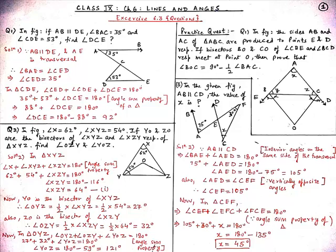Now, students, according to our figure, YO is the bisector of angle XYZ. Therefore, angle OYZ is half of angle XYZ. Since angle XYZ is equal to 54 degrees, angle OYZ equals 54 divided by 2, which is 27 degrees. Similarly, ZO is also the bisector of angle XZY. So angle OZY equals half of angle XZY. Since angle XZY is equal to 64 degrees, angle OZY equals 64 divided by 2, which is 32 degrees.